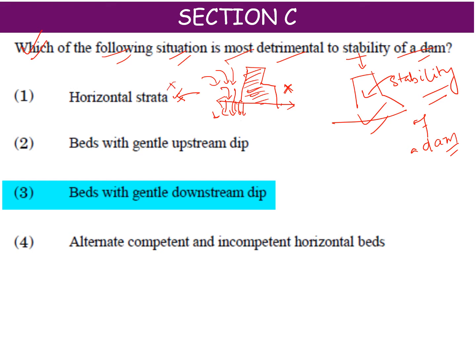Now comes beds with gentle upstream dip. What is upstream dip? The land has a curve, and the dip is occurring in the upstream direction. Think of it as horizontal strata that is dipping upstream. The dam is placed on top, and again water will come and seep. This will not really hamper the dam.